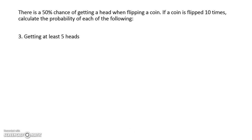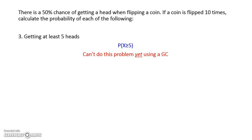In our third problem, we're interested in getting at least 5 heads. So again, we start with probability notation. We want x to be greater than or equal to 5. At the moment, we're not able to use our graphics calculator just yet to do this calculation, because we don't have either the equals sign or the less than or equals to sign. So let's look in a bit more detail about what this actually means.